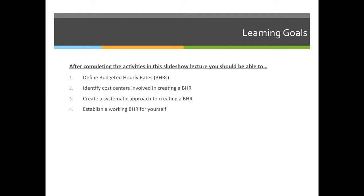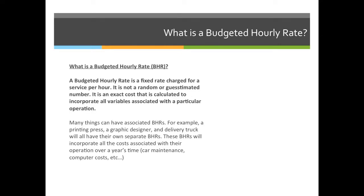The objective of a BHR isn't to make a profit — it's to find your breakeven point. So if I decide that I have to charge $60 per hour, at the end of the year I will breakeven. If I wanted to make money, I'd have to add some sort of percentage or commission on top of that. A budgeted hourly rate is a fixed rate charged for a service per hour. It is not a random or a guesstimated number — it is an exact cost calculated to incorporate all variables associated with a particular operation.